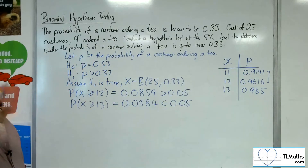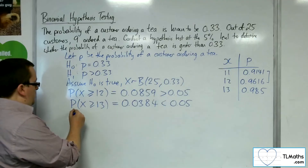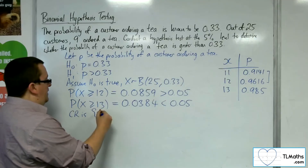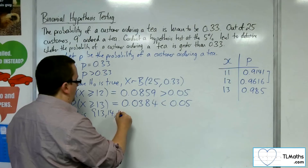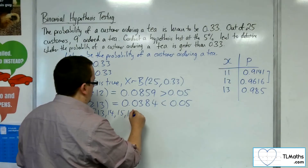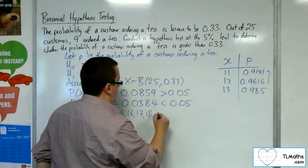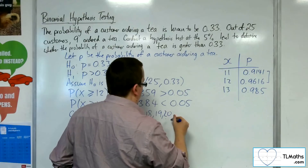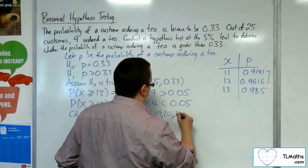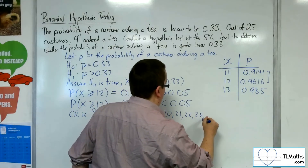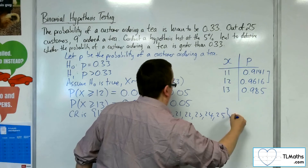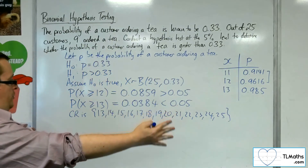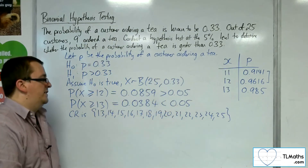The values that are less than 0.05 define the critical region. So the critical region is X ≥ 13, that is 13, 14, 15, 16, 17, 18, 19, 20, 21, 22, 23, 24, 25. That's your critical region: 13 or more.